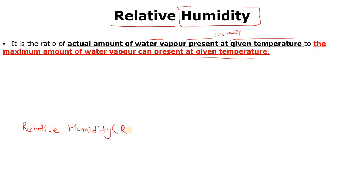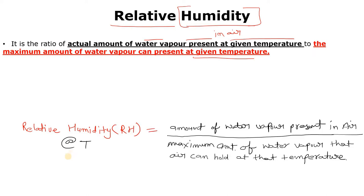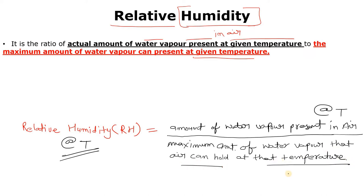Relative humidity is denoted by RH. So whenever we discuss relative humidity, we discuss it with respect to temperature. RH at temperature T is the amount of water vapor present in air at temperature T, to the maximum amount of water vapor that air can hold at that temperature T.